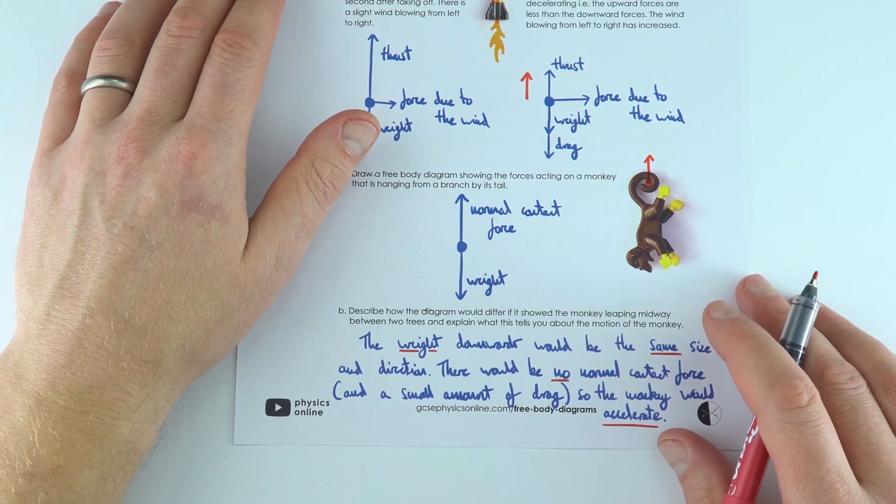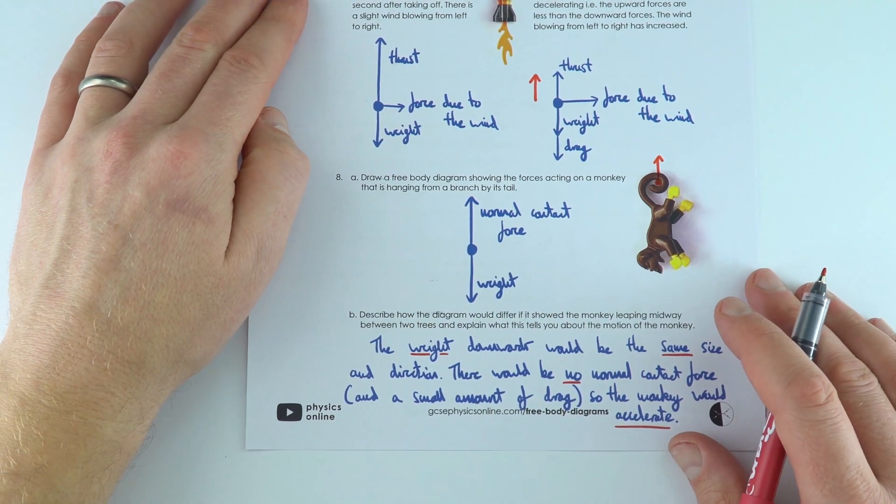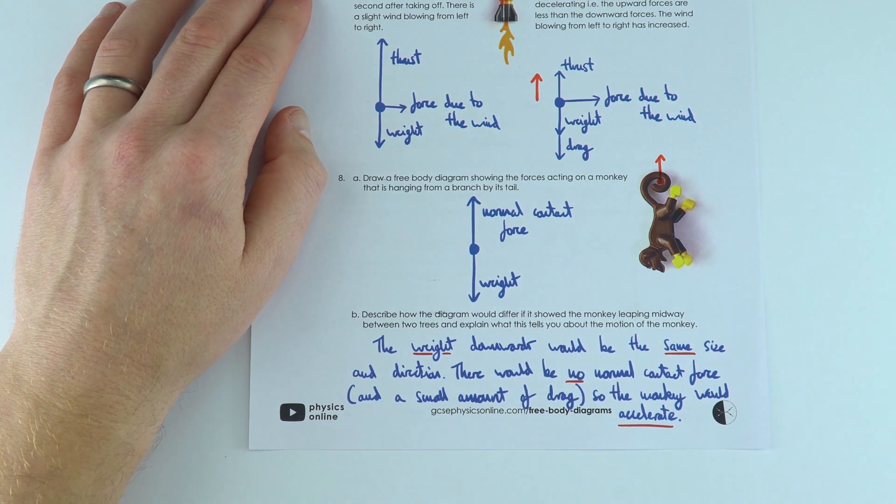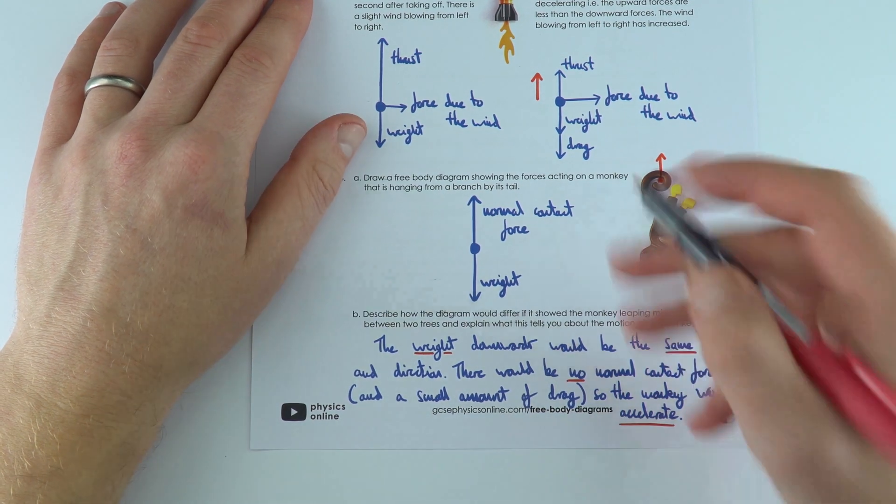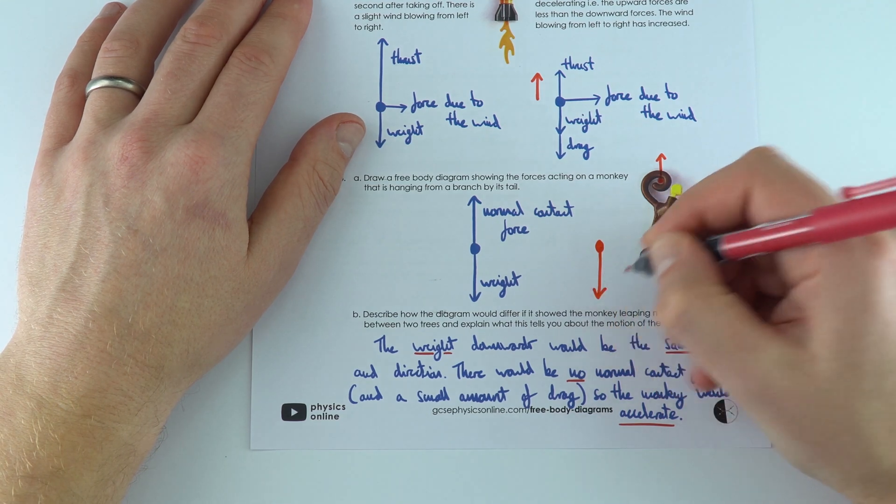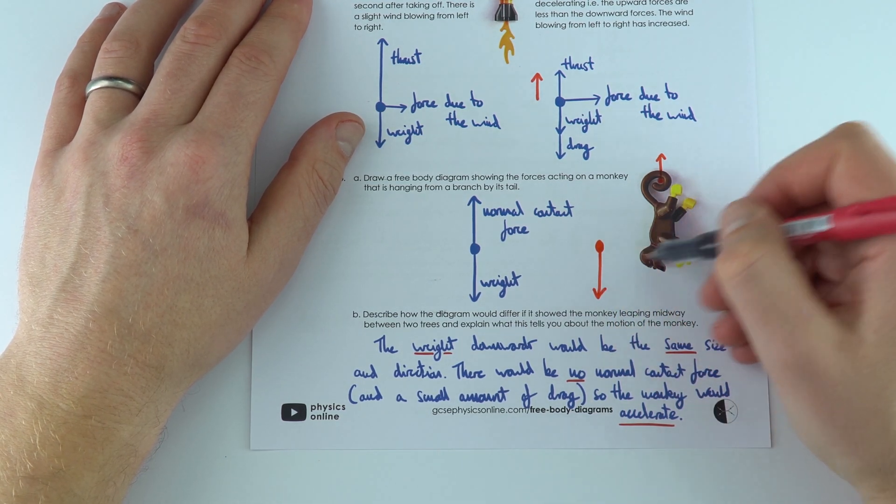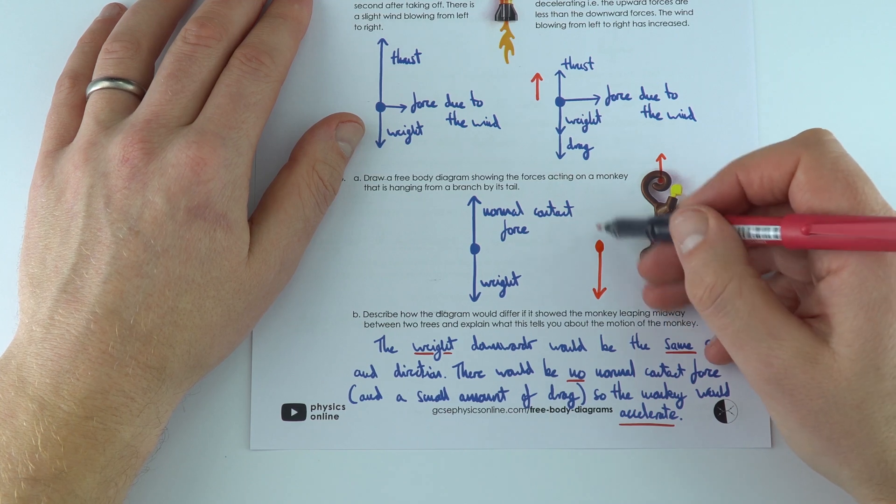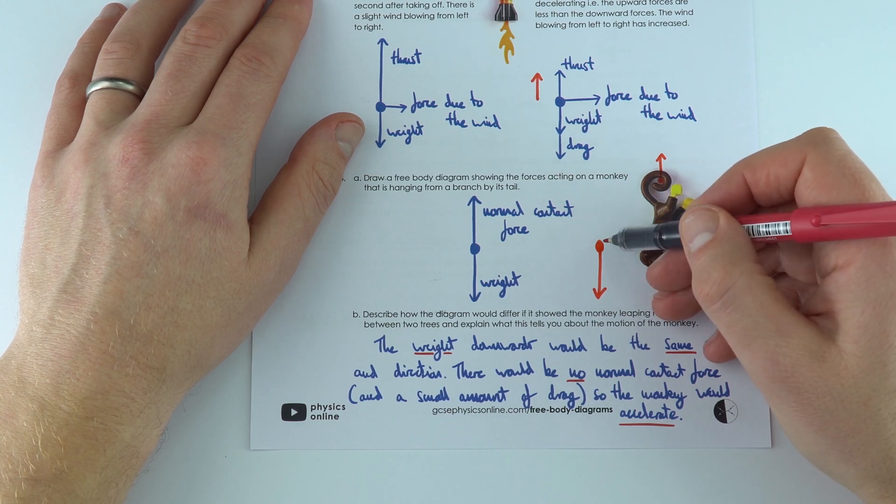And what happens now is, how would the diagram differ if it was midway between leaping? So I'm just going to draw that again. The weight is going to be the same size and it's going to be acting down because the weight of that monkey doesn't change when it's in the air, but now there's going to be no normal contact force.